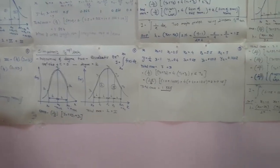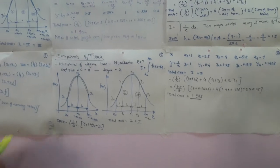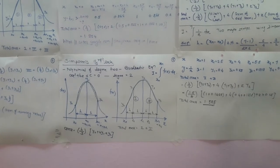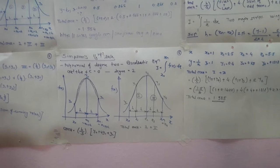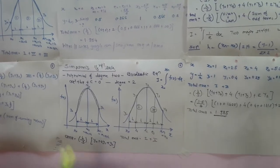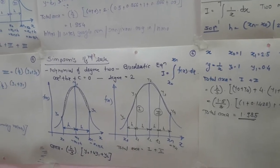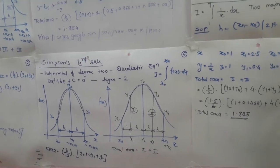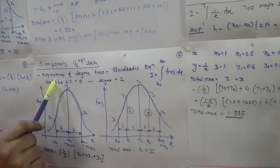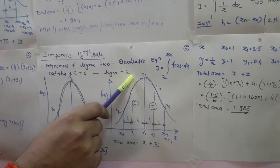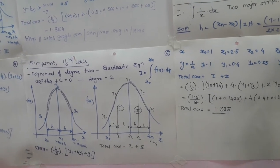Next, we will discuss Simpson's One-Third Rule. Simpson's One-Third Rule is a Newton's Cotes method where a polynomial of degree 2 is used — a quadratic equation in the form ax² + bx + c = 0, where the maximum index is 2. Since the maximum index is 2, we require a minimum of three points to join the curve.